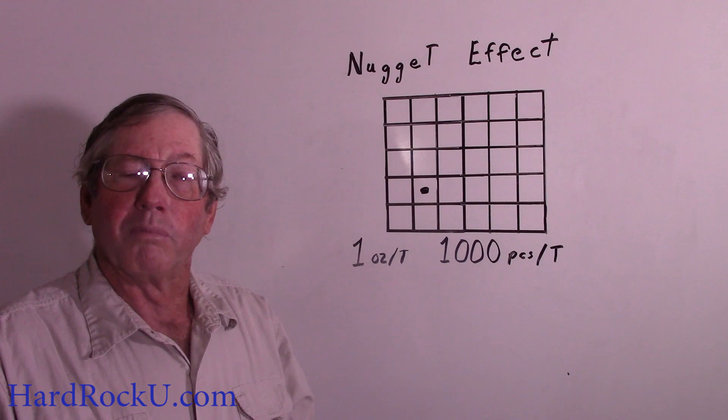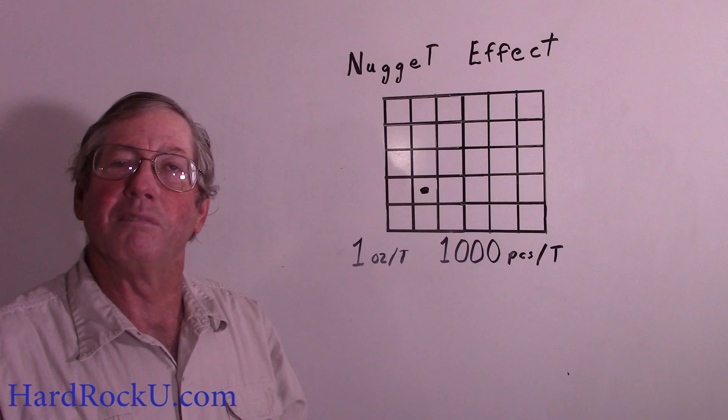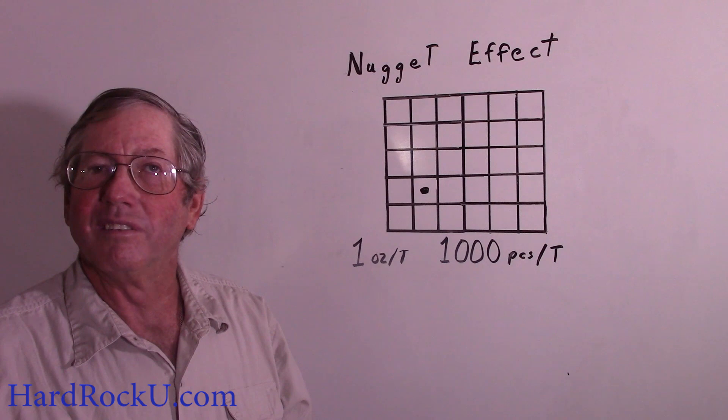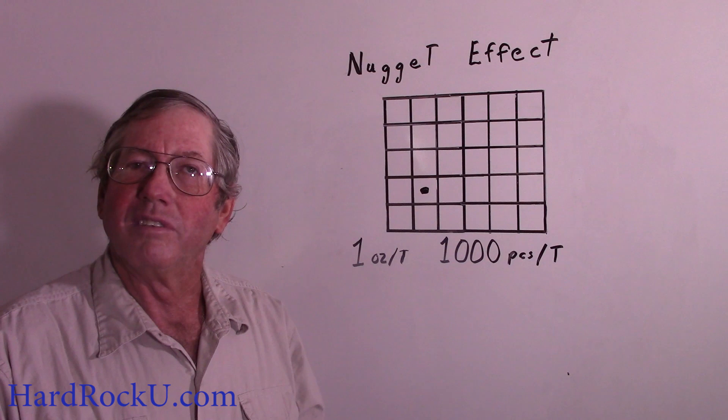One of the problems is there are several different methods of assaying. They all have their pluses and minuses. It's a bit ore dependent. And none of them are entirely accurate every single time.